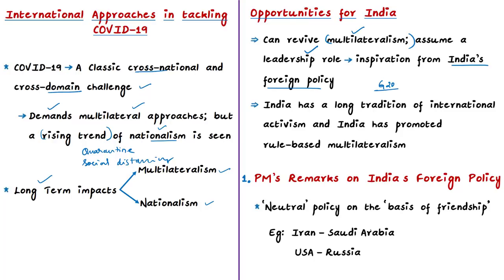India has a long tradition of international activism and has promoted rule-based multilateralism. The author discusses two highlighting facts based on remarks made by the present Prime Minister at a recent private global summit. The Prime Minister said India's present foreign policy is different from the earlier policy of non-alignment, as non-alignment was a defensive policy advocating equal distance from every country. The present India's foreign policy is neutral — based on friendship — for example, India maintains good friendship with both Iran and Saudi Arabia, who are traditional enemies.